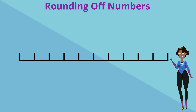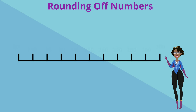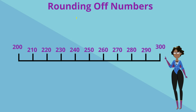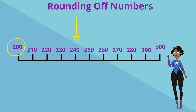We can also use a number line to round to the nearest hundreds. The number line helps us visually establish which hundred a number is closest to. For example, if we have the number 240, we can see that it's below 250 and it's closer to 200, so we round to 200.